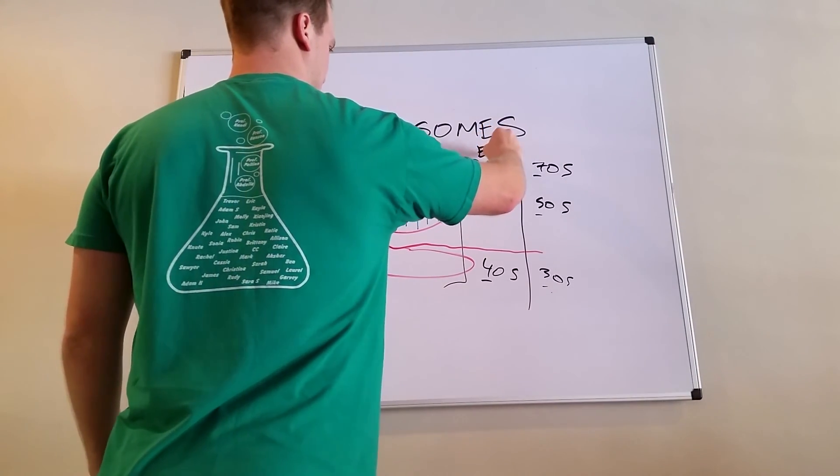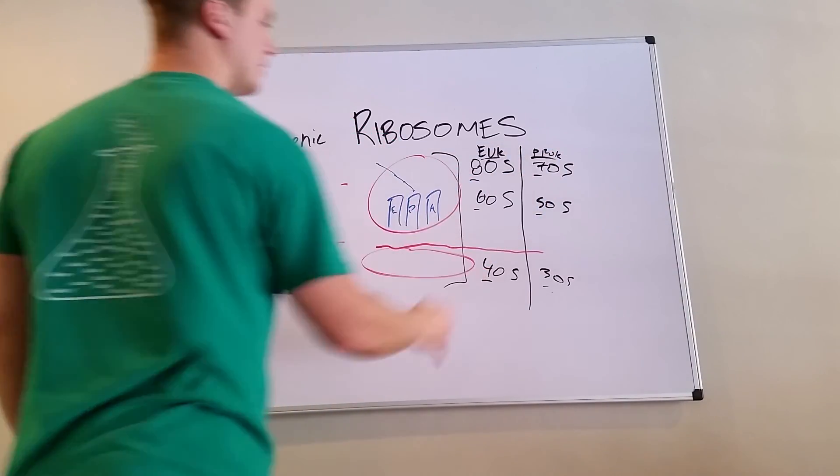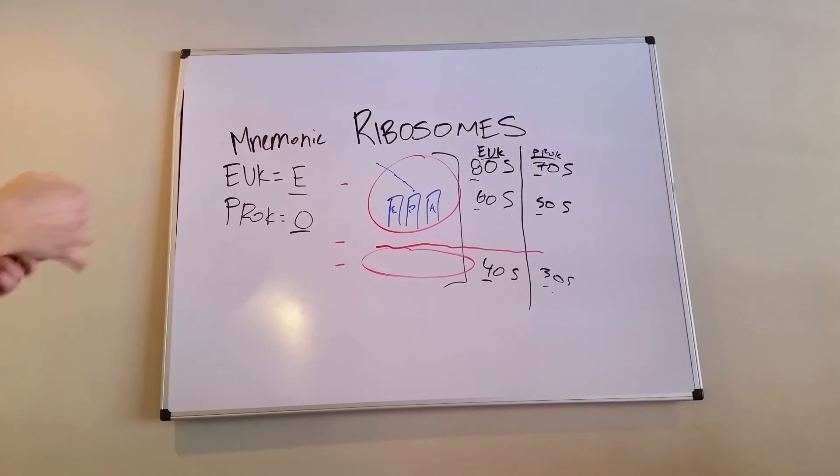All right, eukaryotes here because they're the evens, and then the prokaryotes are over here on the right side. 30S is the small subunit, 50S is the larger subunit, and 70S is the combined complex size. There you have an easy way to remember the subunits of ribosomes. Thank you.